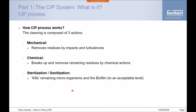CIP is composed of three actions. The first action is mechanical — generally the first step of the CIP process — where we have a pre-rinse step using water at high velocity. We use the turbulence within the water to remove most of the visible solids, anything still coating our pipework or vessels. We then use acids or bases, which is the chemical step, to start breaking up and removing remaining residue by chemical action.